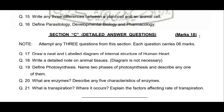Third question hai: 'Define photosynthesis, name two phases of photosynthesis and describe any one of them.' Photosynthesis ki definition likhni hai, chahen toh equation bhi likh sakte hain. Phir dono phases ke naam batane hain — dark reaction aur light reaction — aur jo bhi aasaan lage ya yaad ho usse describe karein. Next: 'What are enzymes? Describe any five characteristics of enzymes.' Paanch characteristics headings ke saath batani hain.